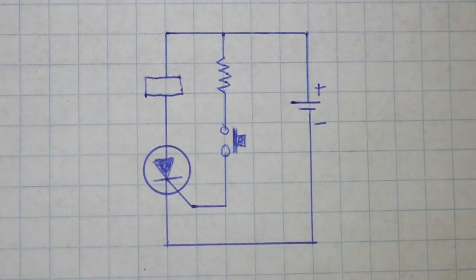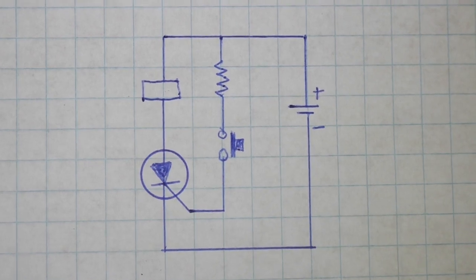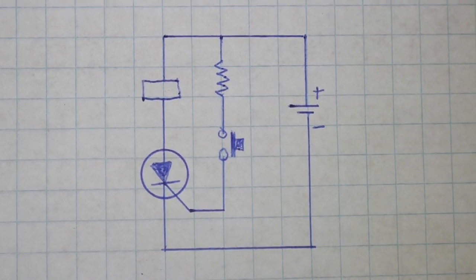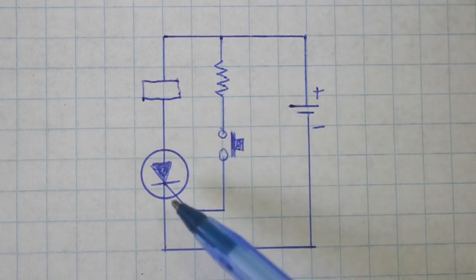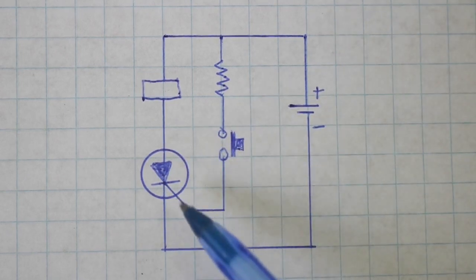This is the basic configuration of a tyristor used as a switch. This is the symbol. We have the anode, cathode, and the gate.